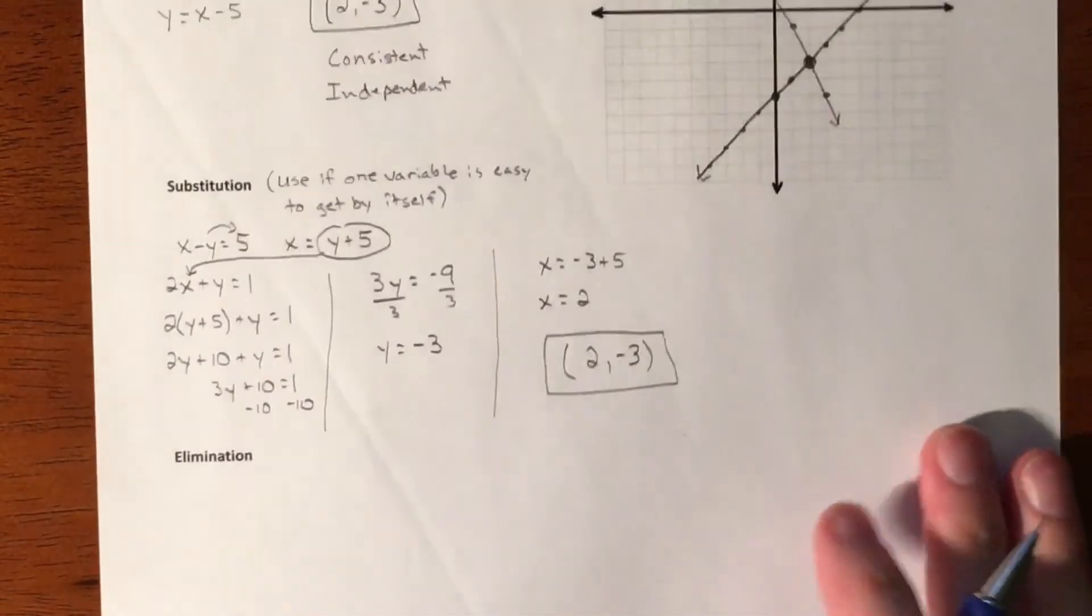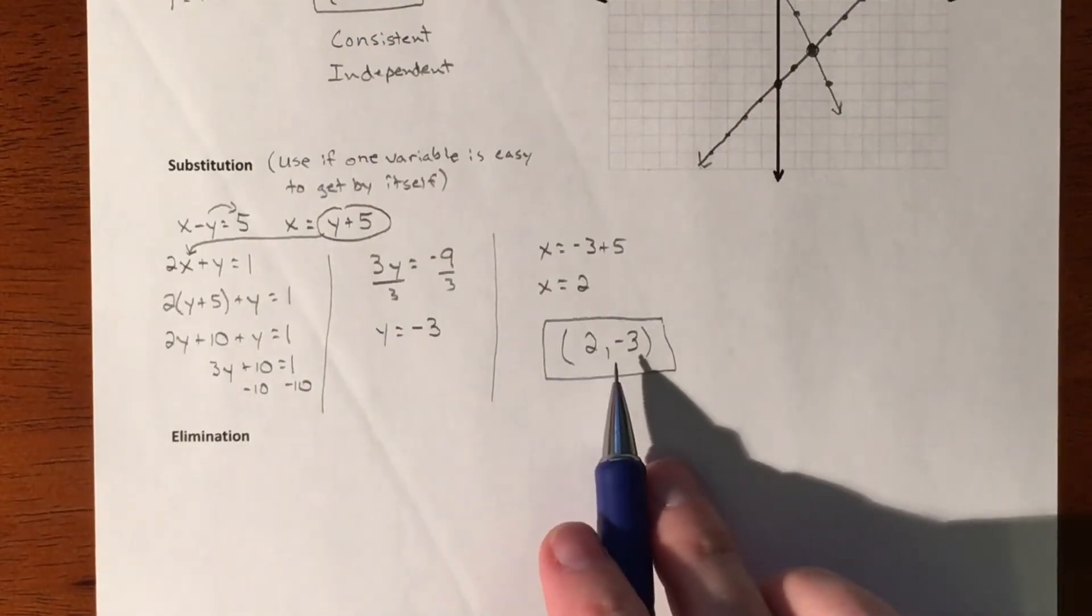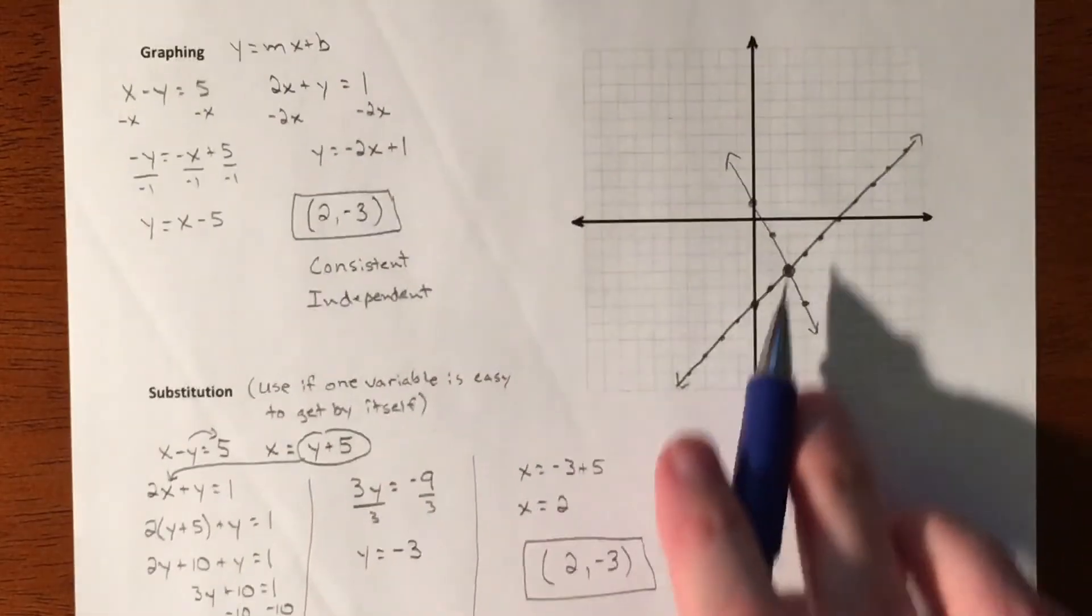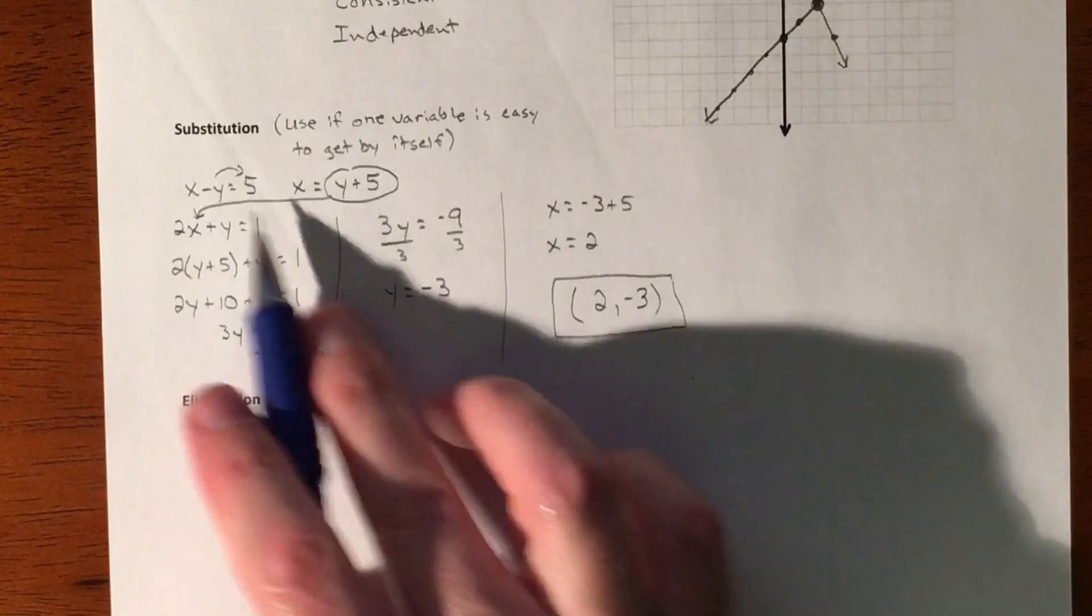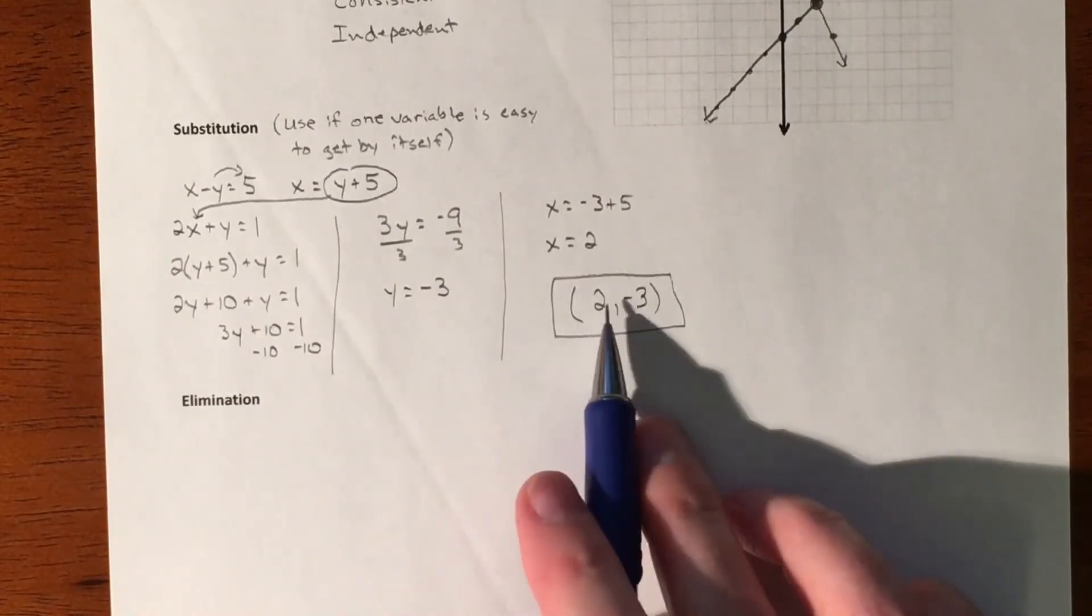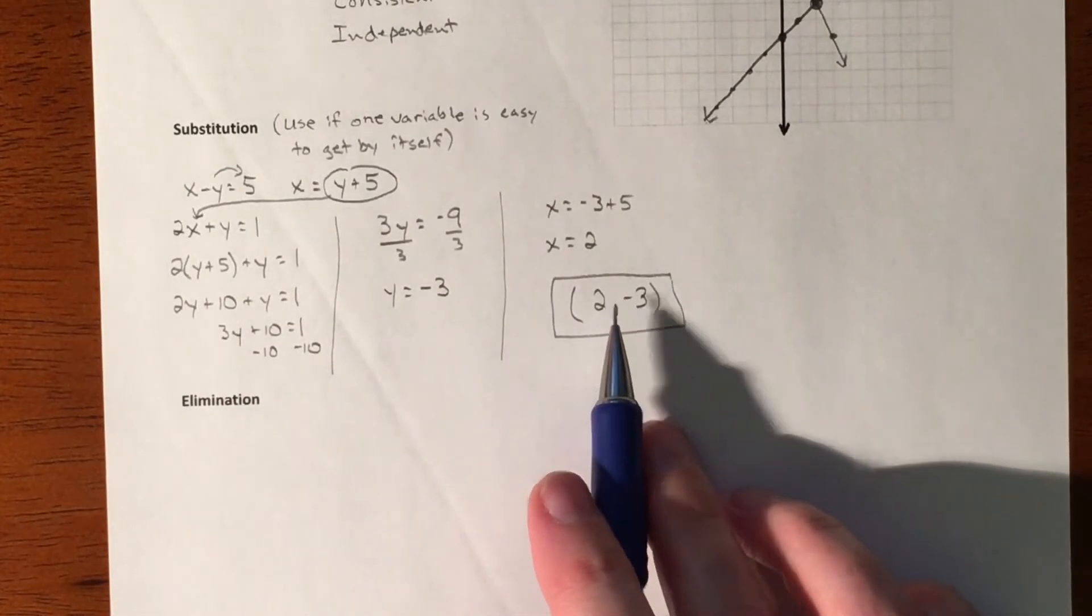Now I know we already knew that, but the idea is that I wouldn't have done the graph. I just would have done the substitution, gotten my solution. So I would know that that's where the lines cross if I were to graph them.